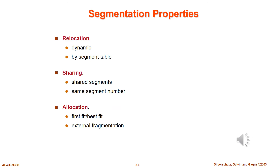There are three key properties of segmentation: relocation, sharing, and allocation. Relocation is dynamic and is decided by the segment table. Segments can be shared, and shared segments will have the same segment number. Allocation can be done based on first fit, best fit, etc.